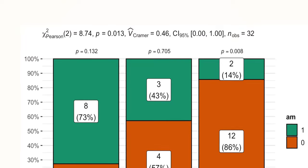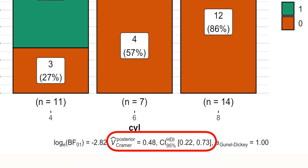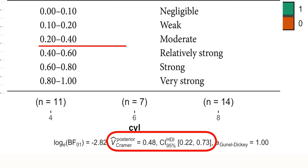However, ggbarstats also provides a second Bayesian v-Cramer effect size, which delivers much more useful 95% highest density intervals. The interpretation of the Bayesian effect size is the same, so the relationship between our variables is relatively strong.